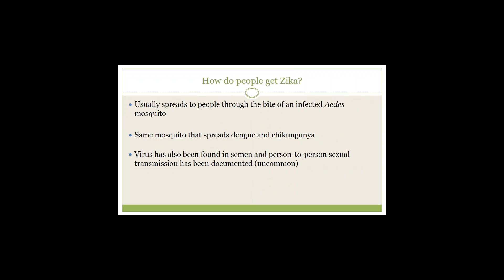Zika is spread to people through the bite of an infected Aedes mosquito — the same mosquito that spreads dengue and chikungunya. Zika virus has been found in semen and can be spread from person to person through sexual activity, though more study is being done to learn more about this mode of transmission.